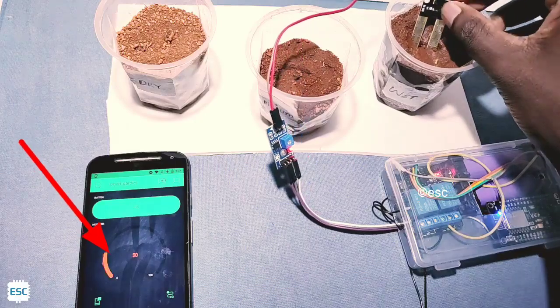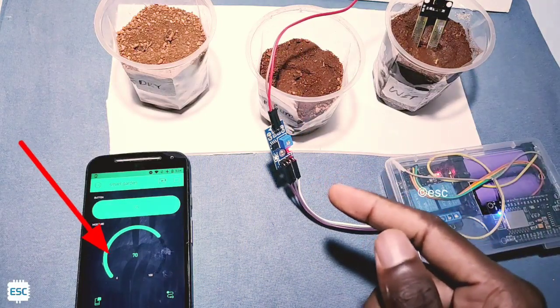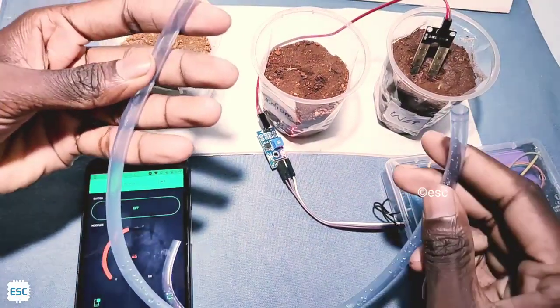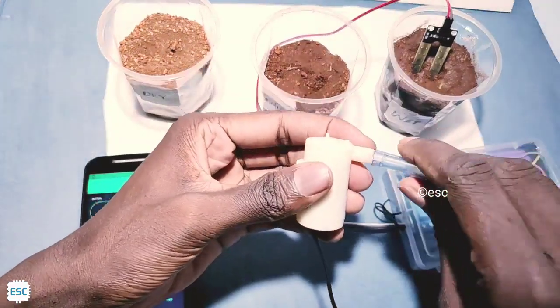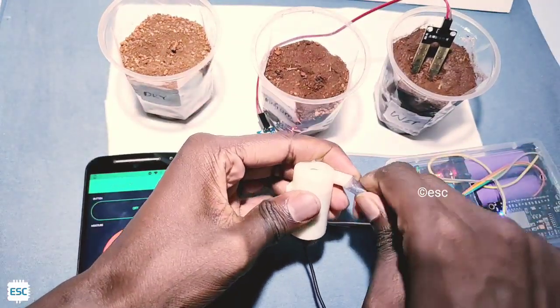Now I place it in the third glass, that is wet - it shows high moisture value. Now I connected a tube for the water pump.